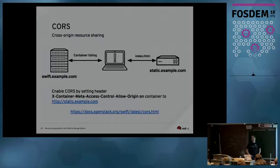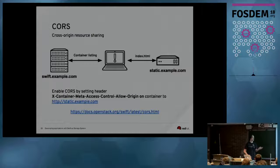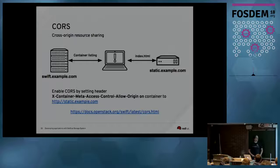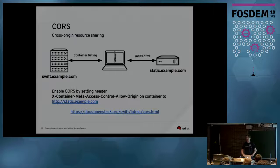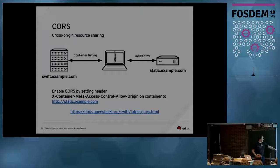When writing applications that run in the browser — for example using AngularJS — and you're serving the Angular app from a different domain than your Swift cluster, you need to enable CORS, which is cross-origin resource sharing. If Swift runs on one domain and your static files with Angular run on a different one, by default the browser application cannot retrieve data from a container listing. To enable this, you set a special metadata flag on a container.